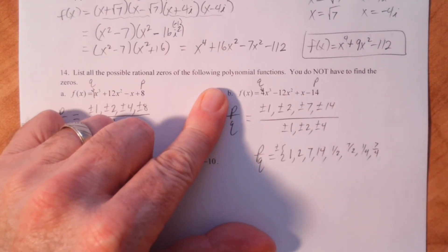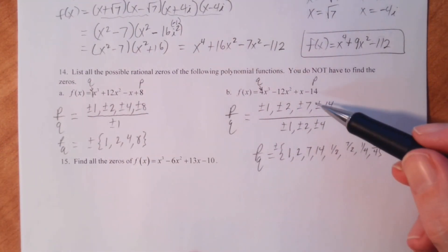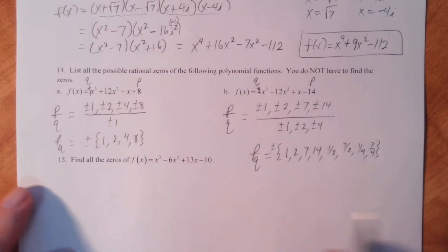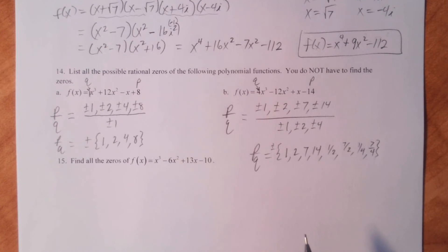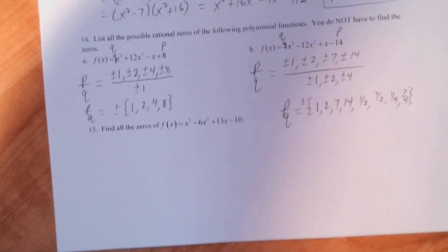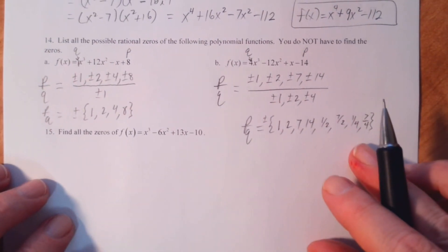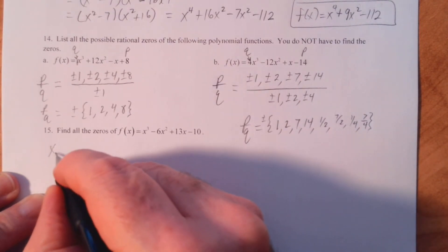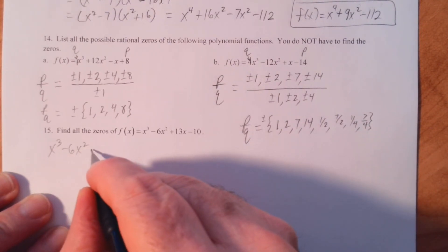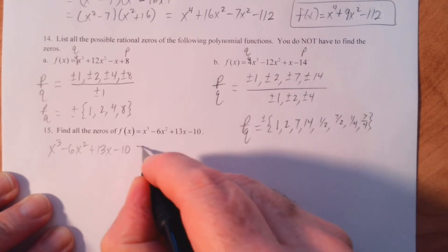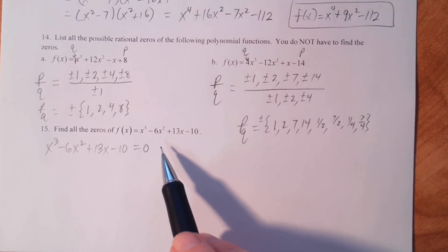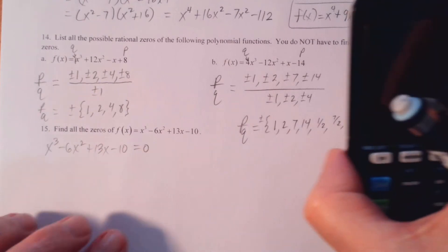So the possible zeros for this polynomial function are plus or minus 1, 2, 7, 14, one half, 7 halves, one fourth, and 7 over 4. Notice, we haven't found any zeros — all we've done is use the rational zeros theorem to see what our possible zeros are. Let's go down to number 15. It says find all the zeros of f of x equals x cubed minus 6x squared plus 13x minus 10. We're going to set this equal to zero. You can try factoring by grouping, but it doesn't work.